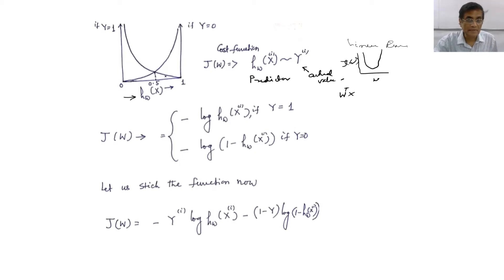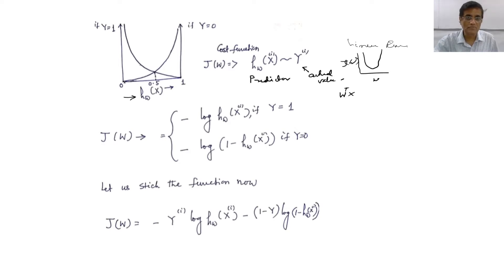As the predicted value diverges from the actual, the cost increases. This is an exponential curve. If the ground truth says a sample belongs to class y equals 1 but the predictor says it belongs to class 0 — that is absolutely wrong — and we assign a very large penalty, manifested as a huge cost in the cost function. This is why we use the exponential family.